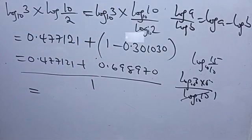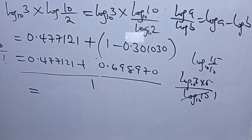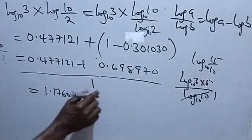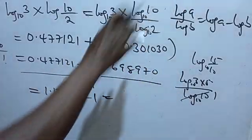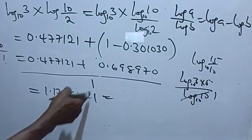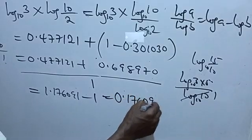Let's add: 0.477121 plus 0.698970 gives 1.176091. Then we subtract 1, applying the division law. So the result is 0.176091. That is the value of log 1.5 base 10.